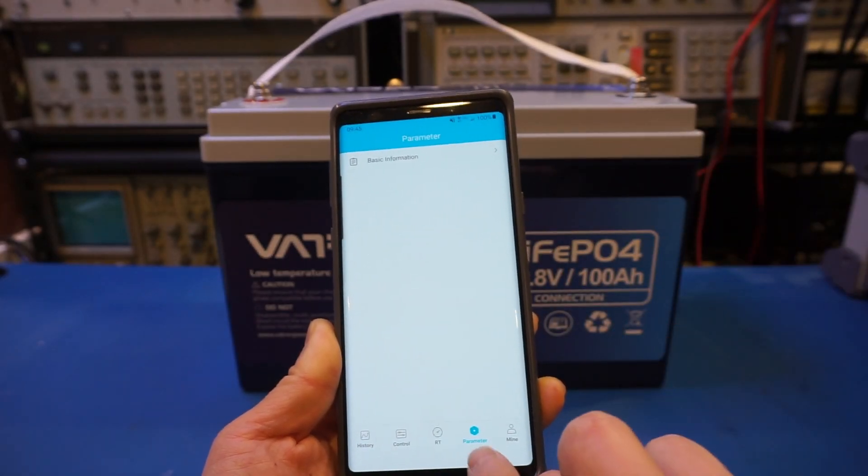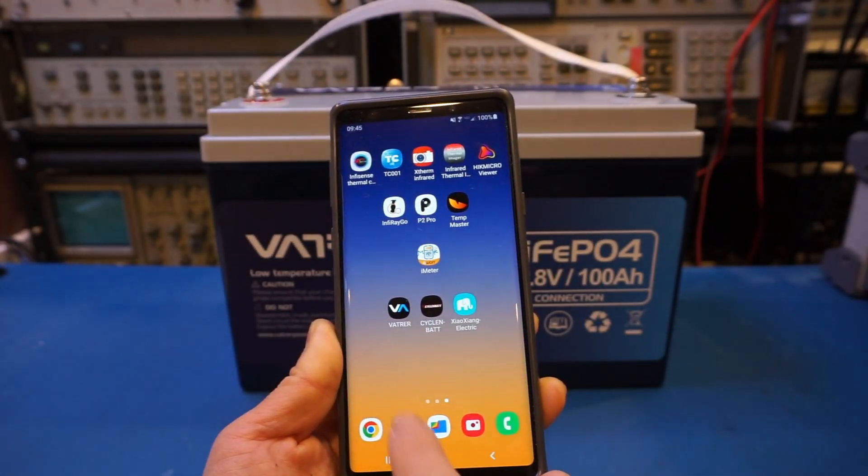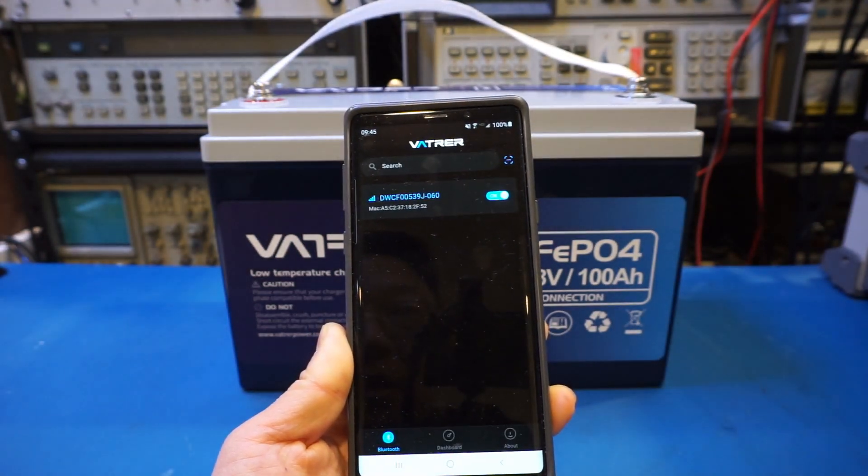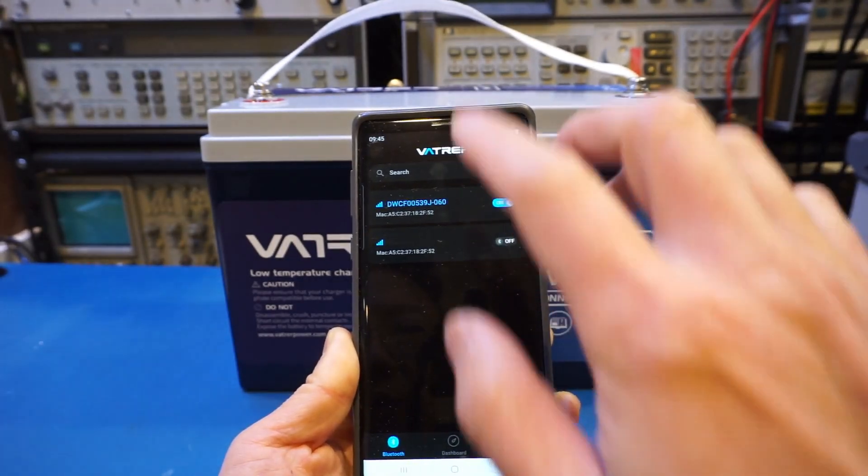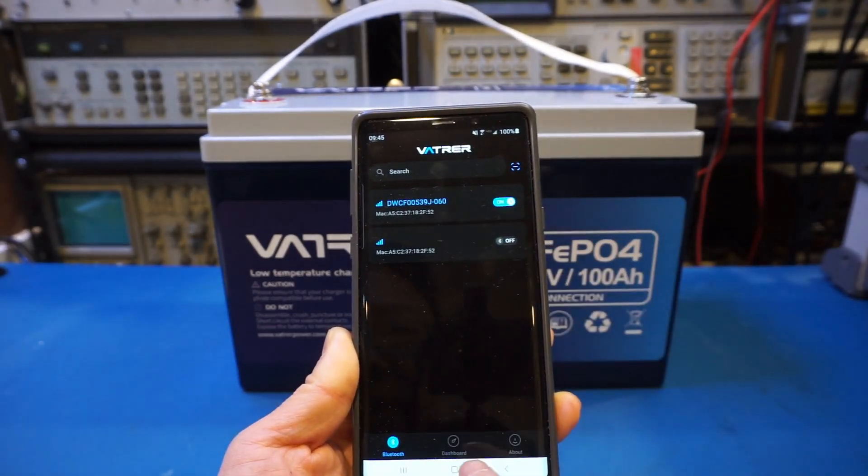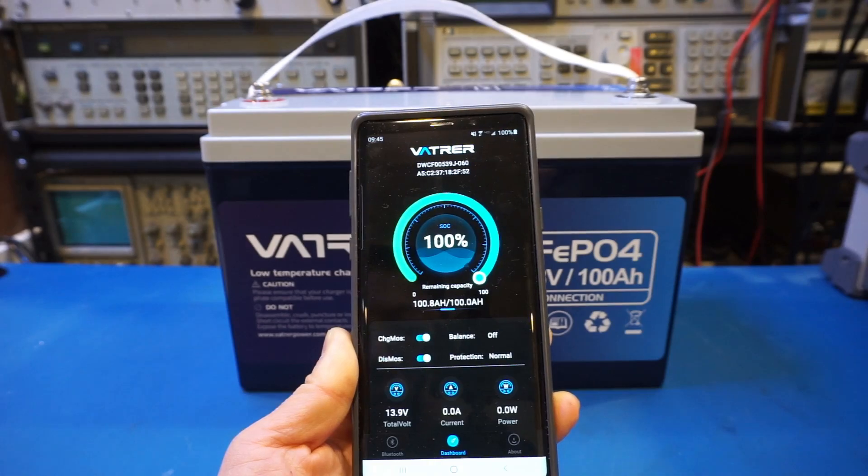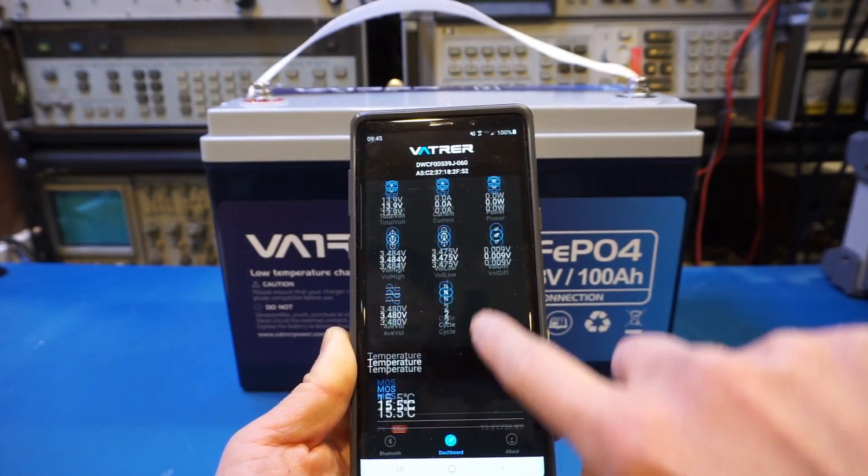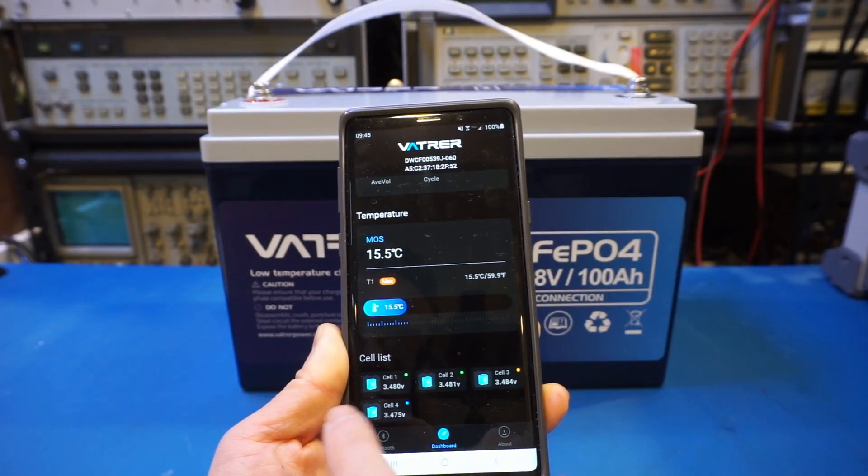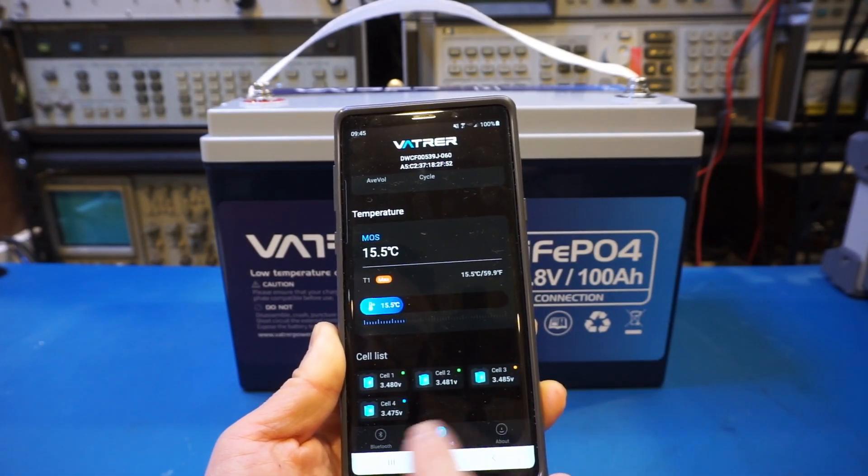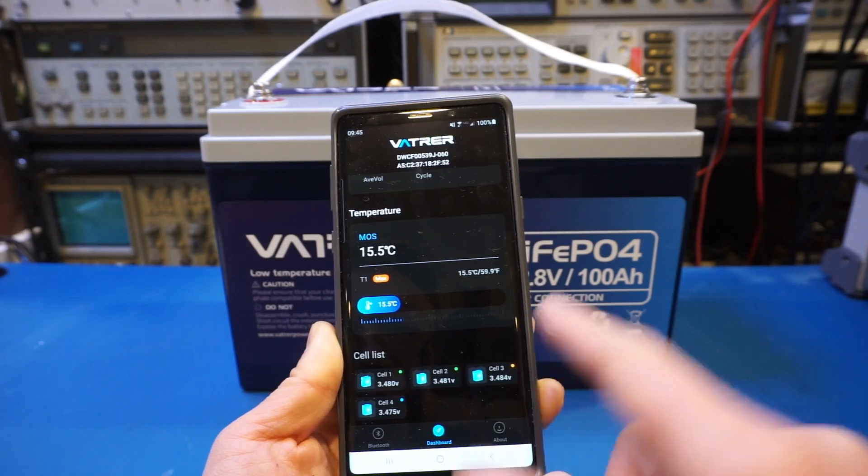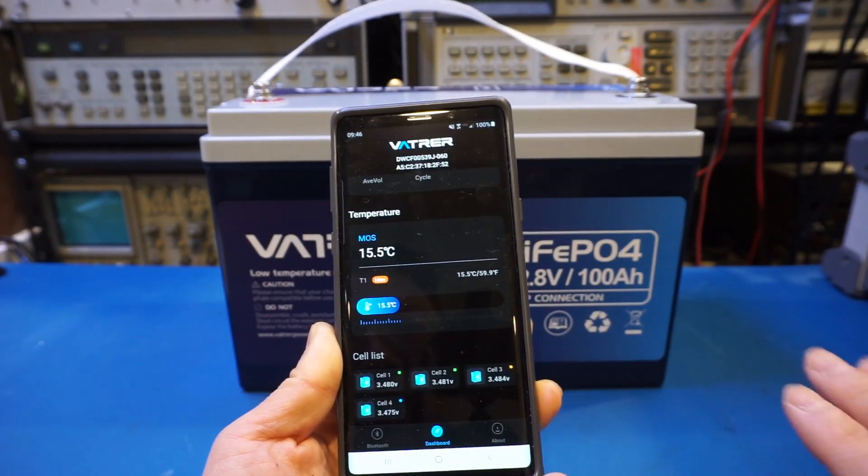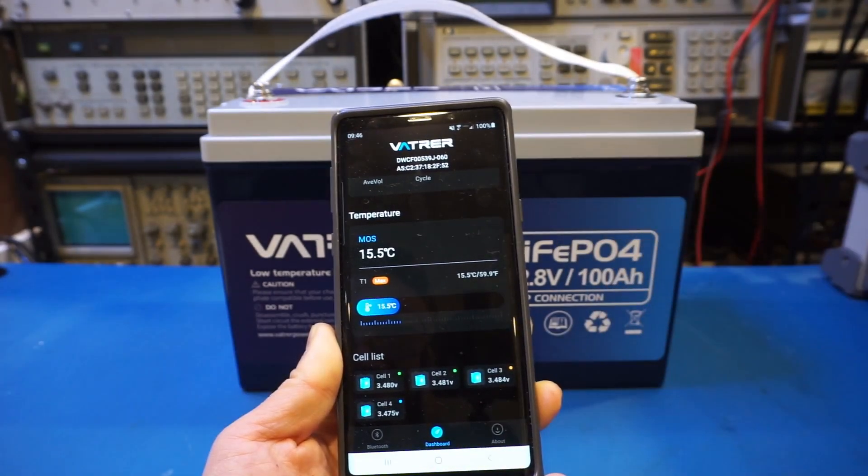Let me show you the VATRER-specific app. Here again we're connected to the battery. Let's take a look at the dashboard. You can see that all the information is right at your fingertip. We can go down here and see the voltage of each individual cell. This is after it's balanced. You can see that they're fairly close, within roughly 10 millivolts of each other, so that's pretty good. We'll take a look at this app again when this battery is in use.